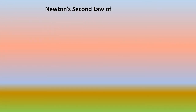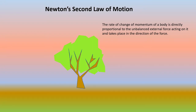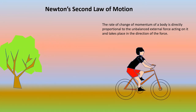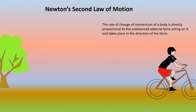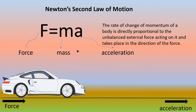Now children, let's see Newton's second law of motion. It states that the rate of change of momentum of a body is directly proportional to the unbalanced external force acting on it, and takes place in the direction of the force. Here we have a boy riding a bicycle. Newton's second law says that acceleration happens when a force acts on a mass. Your bicycle is the mass, and your leg muscles pushing on the pedals is the force. So it is clear that force is the product of mass and acceleration.